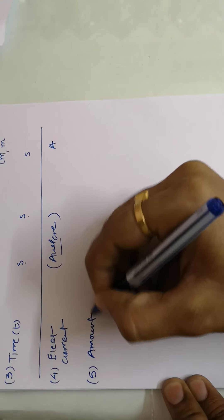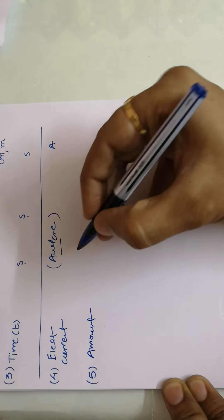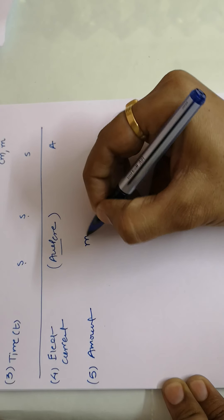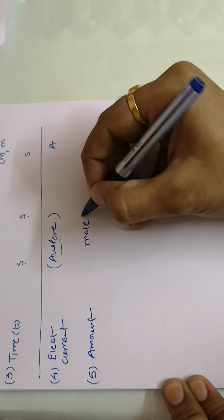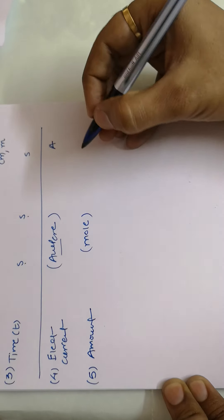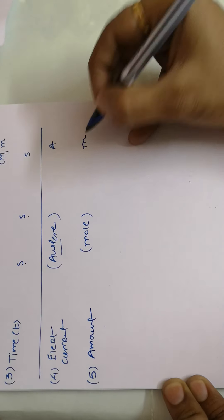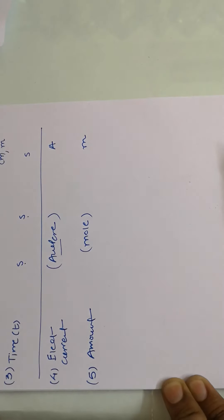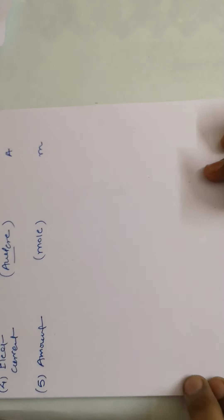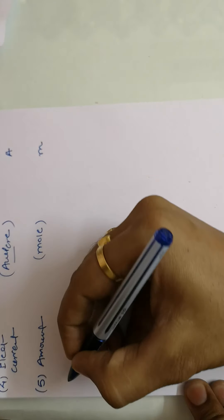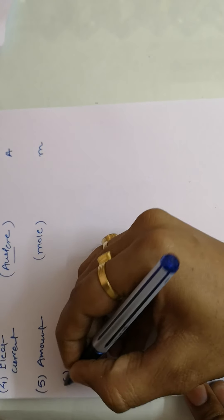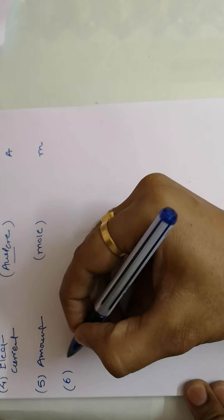The fifth one is the amount of substance. It is represented by the unit mole, and its symbol is the small letter 'mol'.